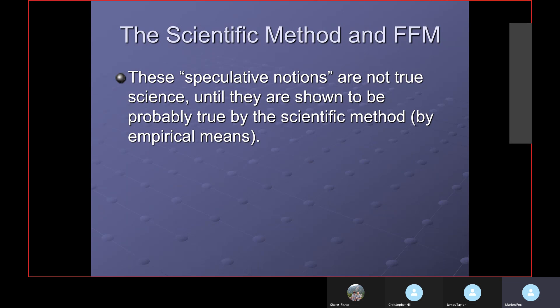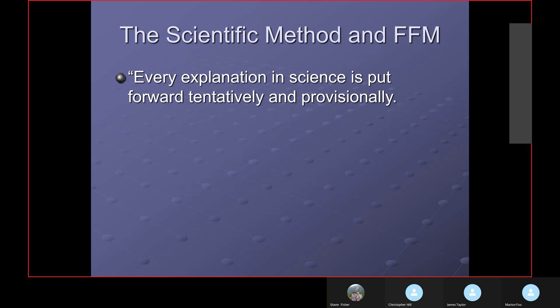These speculative notions are not true science — that's my comment — until they're shown to be probably true by the scientific method, by empirical means, by our senses. Continuing to quote Copi: every explanation in science is put forth tentatively and provisionally. It's tentative — we're dealing with probabilities, something is probably true.